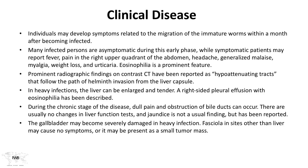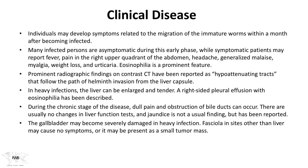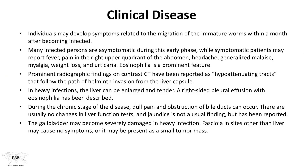Individuals may develop symptoms related to migration of the immature worms within a month after becoming infected — worms migrating through liver tissue cause right upper quadrant pain. Many persons are asymptomatic during the early phase, while symptomatic patients may have fever, liver pain, headache, generalized malaise, muscle pain, weight loss, and some can develop urticaria. Eosinophilia is often a prominent feature. On imaging, contrast CT shows hypoattenuating tracks representing the worm invasion paths through the liver. In heavy infections the liver can become enlarged and tender, and a right-sided pleural effusion with eosinophilia can occur.